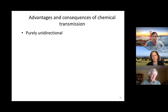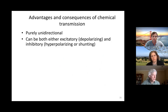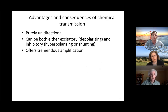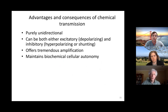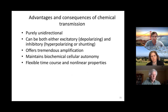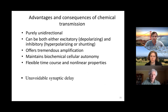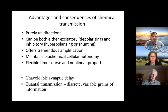Some advantages and consequences of chemical synaptic transmission: it is purely unidirectional, it can be excitatory or inhibitory, there can be a lot of amplification because lots of neurotransmitter can be packed in vesicles, and it keeps cells separate so ions in one cell don't diffuse into another, maintaining separate biochemical composition. Depending on the receptors, which can have all sorts of different gating properties, there can be very flexible time courses and different nonlinear properties. Some downsides: there's an unavoidable synaptic delay of a few milliseconds, and since the basic units of transmission are synaptic vesicles, we have what's called quantal transmission — discrete and sometimes variable grains of information transmitted across the synapse.